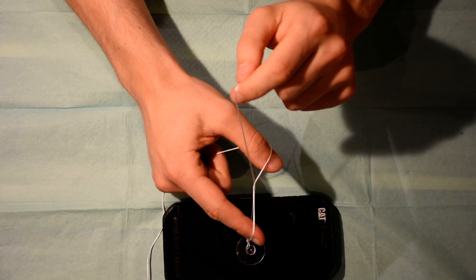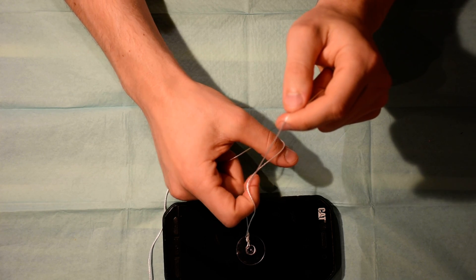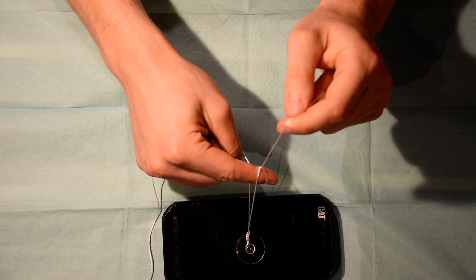Then you take your index finger, take it behind the fixated cord and you loop it around your original cord like this.